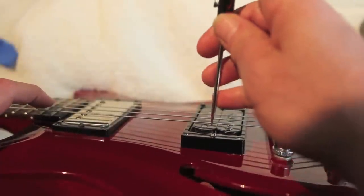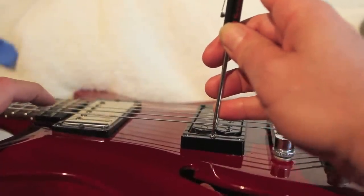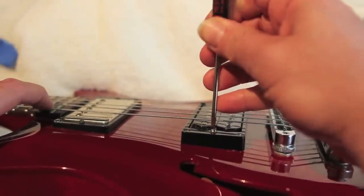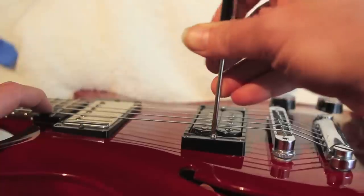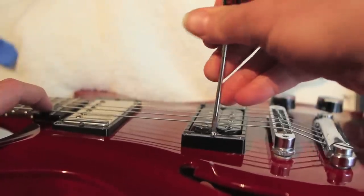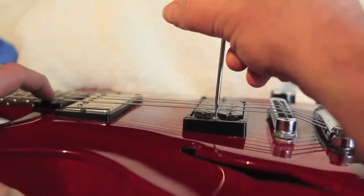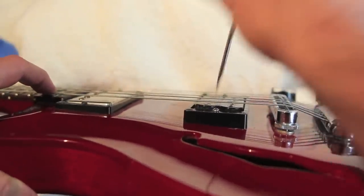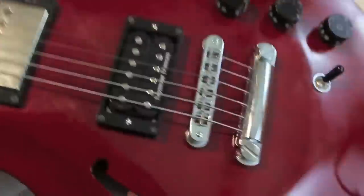If everything's working as expected, restring and adjust the pickup height. Here's one good technique: press your string down at the highest fret and raise the pole pieces till they almost but don't quite touch the string. That'll give you a good starting point, and from there you can adjust to taste. Do the same on the treble side.